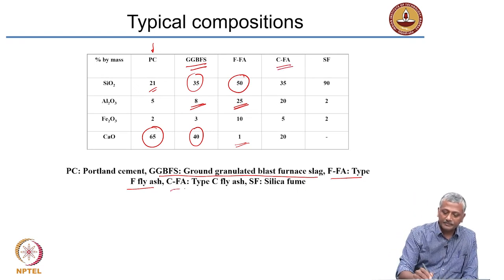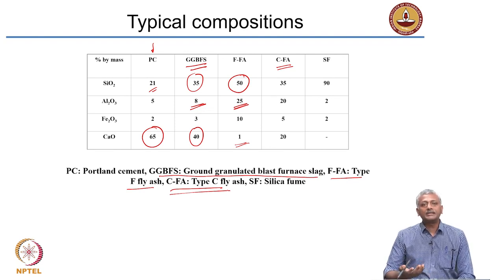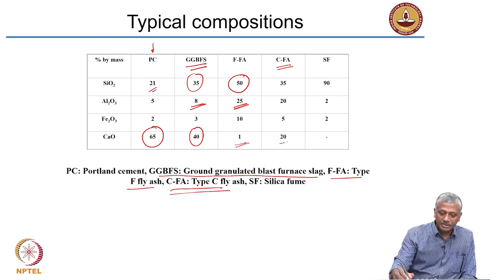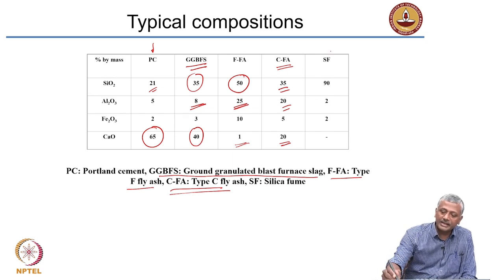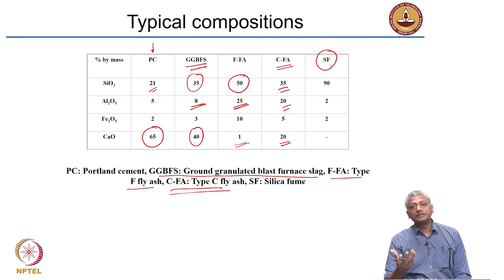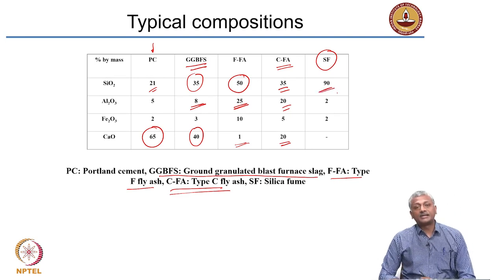Type C fly ash — from burning lignite, which is an impure form of coal, as in the Neyveli lignite corporation in Tamil Nadu — produces fly ash with large amounts of impurities like calcium, silica, and alumina. That is called type C or high calcium fly ash. When processing silicon metal for the semiconductor industry, a very fine dust called silica fume is produced — almost very high purity silica, more than 90 percent SiO2.